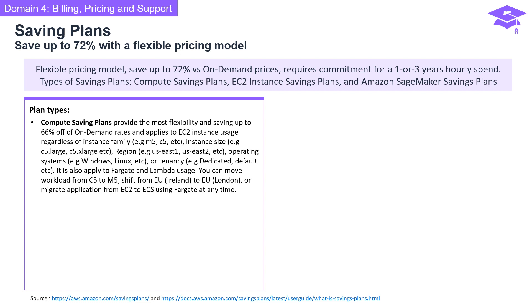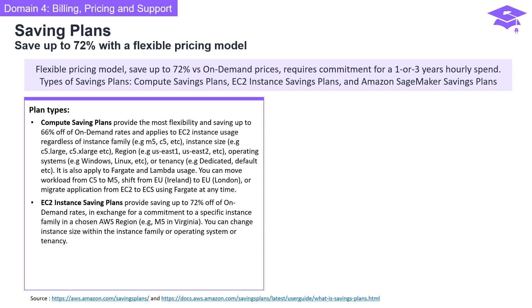Compute savings plans give you the freedom to shift workloads, change instance types, or migrate applications at any time. EC2 instance savings plans offer savings up to 72% off on-demand rates. You commit to a specific instance family in a chosen AWS region, with flexibility to change instance sizes, operating systems, or tenancy within the chosen family.